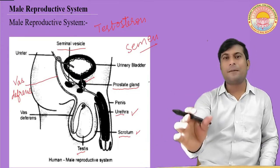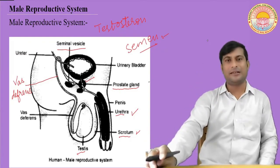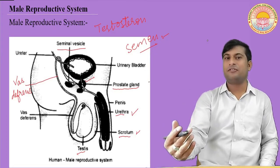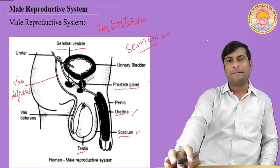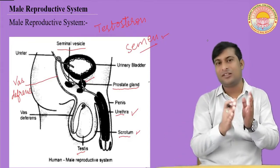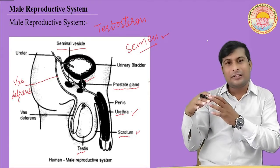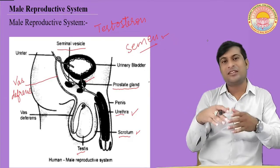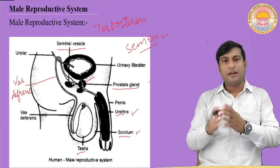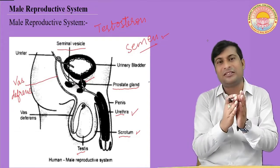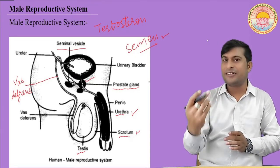The secretions from the seminal vesicles and the prostate gland nourish the sperm. The mixture of these secretions with the sperm is known as semen. The penis is the copulatory organ through which the male gamete is delivered at the site of fertilization. Sperms are tiny bodies which have a tail, and this tail makes them motile.